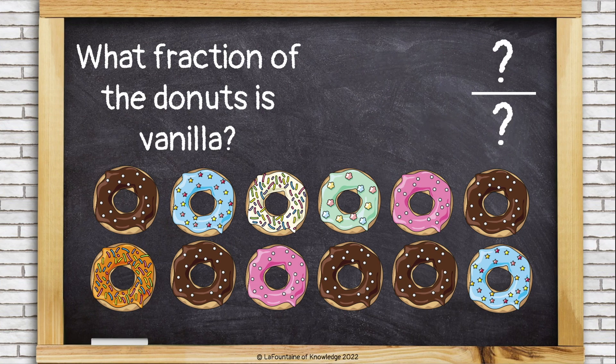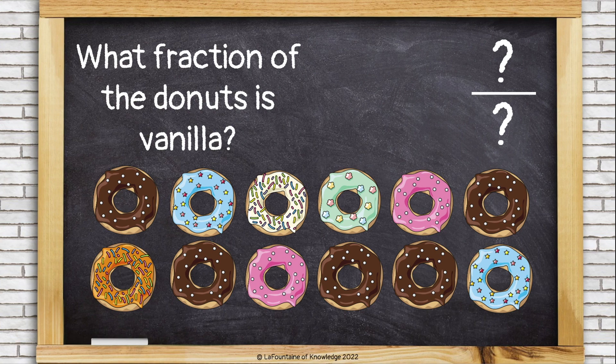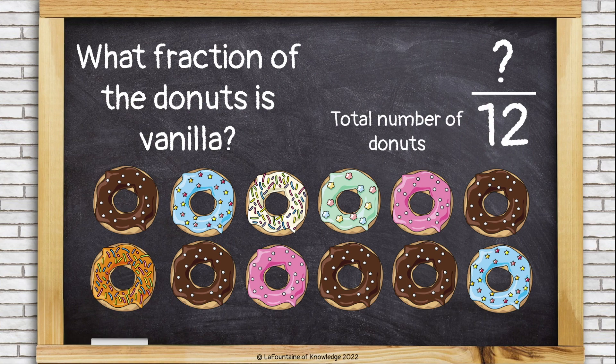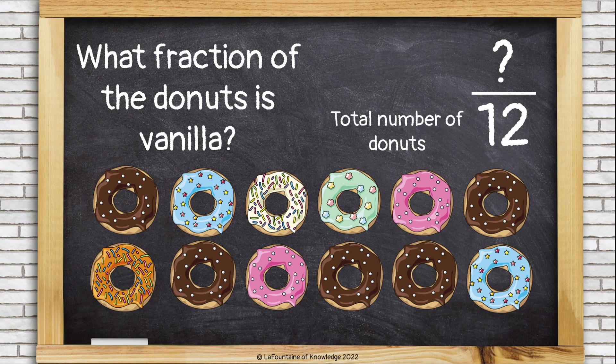What fraction of the doughnuts is vanilla? Well, my total number of doughnuts has not changed. I still have 12 doughnuts, so that is still my denominator. But this time, I'm considering the number of vanilla doughnuts, and there's just one vanilla doughnut. So I have one out of 12, or one twelfth of these doughnuts are vanilla.